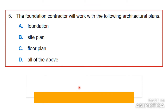Number five: the foundation contractor will work with which architectural plans? The contractor comes to dig the trenches and so on. The answer is all of the above — he has to look at the foundation plan, the site plan to see where the house is located, and the floor plan to see the layout of the walls. So the answer is all of the above.